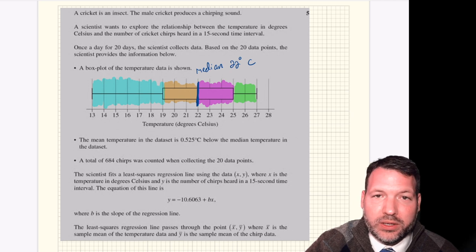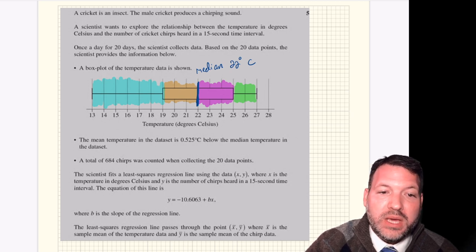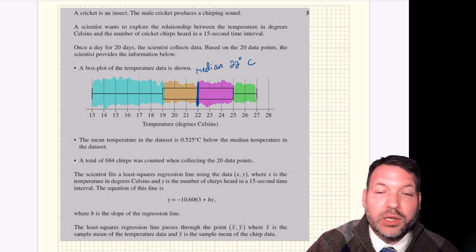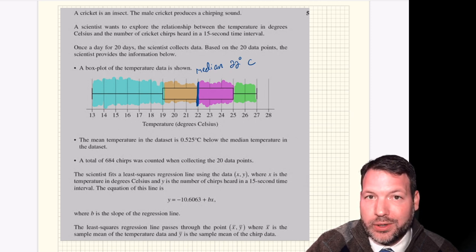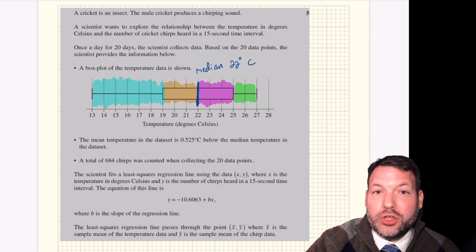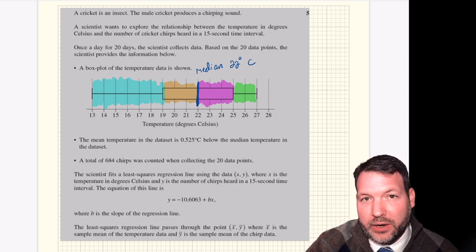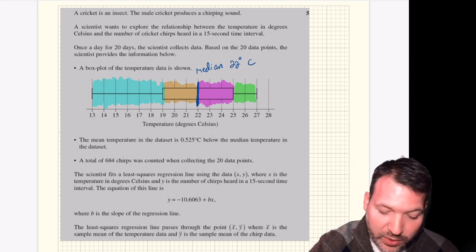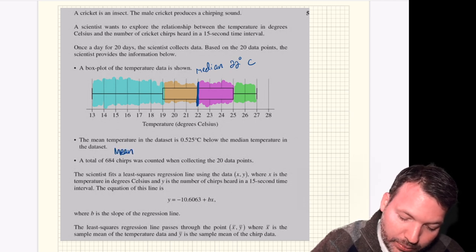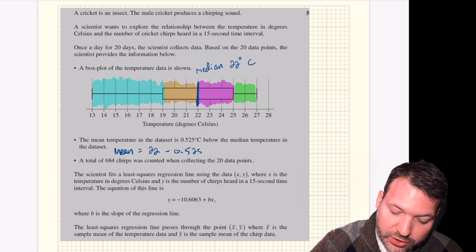If it had been a different median, depending on the temperatures that fall into those different areas, we would have drawn the box plot differently. So this next part where they tell us the mean temperature in the data set is 0.525 degrees Celsius below that median temperature. If we didn't know what the median was from the box plot, we wouldn't be able to say what the mean temperature is. So this is the first step where the math teacher or the educator is kind of doing some sleight of hand. They are making you work for the mean temperature instead of just giving you the mean temperature. So let's go ahead and work that out though. The mean temperature should be the median, which we just said was 22 degrees Celsius, minus 0.525. And so we've got a mean temperature of 21.475 degrees Celsius.